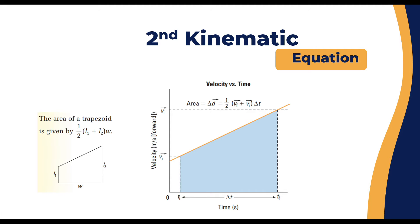The second kinematic equation needs a little more discussion. Scientists derived it by working with the velocity equation. Looking at a graph with time on the x-axis and velocity on the y-axis, the area under the curve between v-initial and v-final represents displacement. That area equals Δd, which can be expressed using the trapezoid area formula: one-half multiplied by (v-final plus v-initial) multiplied by Δt.